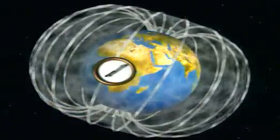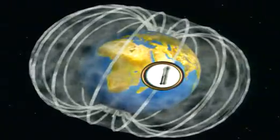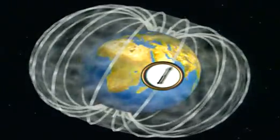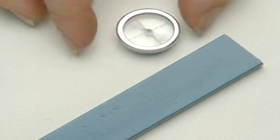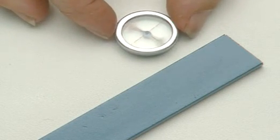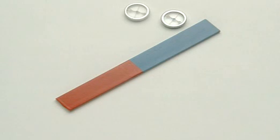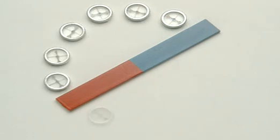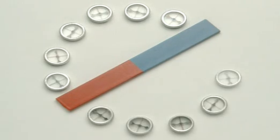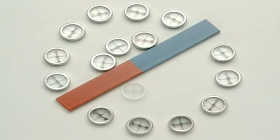The needle of a compass comes to rest along these lines. Magnetic fields are invisible, but small compasses show up a pattern. Each curved line is a line of magnetic force.